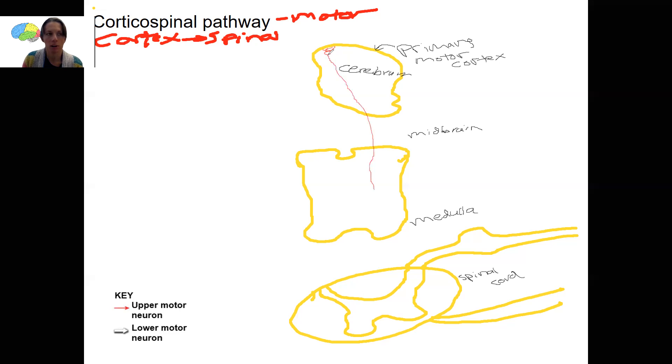And these neurons are going to travel down through the brain stem. And then they're going to cross. Where do they cross? They cross at the decussation of the pyramids. Remember that? Where those fibers cross to the other side?